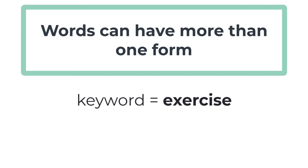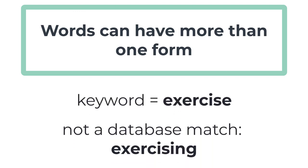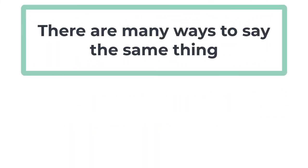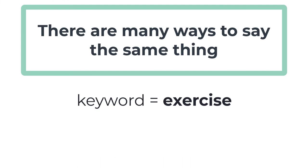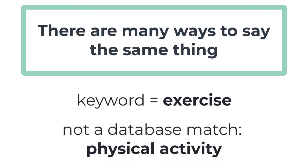For example, if your keyword is exercise, the database will not consider the word exercising to be a match, even though they both convey the same idea. Also, there are often many ways to say the same thing or something very similar. For example, if your keyword is exercise, the database will not consider the phrase physical activity to be a match.